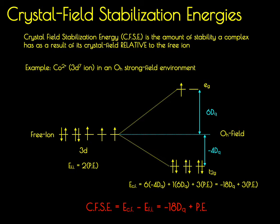The crystal field stabilization energy is the energy provided by the crystal field minus the energy of the free ion. In this case, that equals minus 18dq plus one pairing energy, because two pairing energies of the free ion cancel out one of the pairing energies of the octahedral field. That's our crystal field stabilization energy for the cobalt 2+ ion in a strong octahedral field, expressed in terms of dq and pairing energy values.